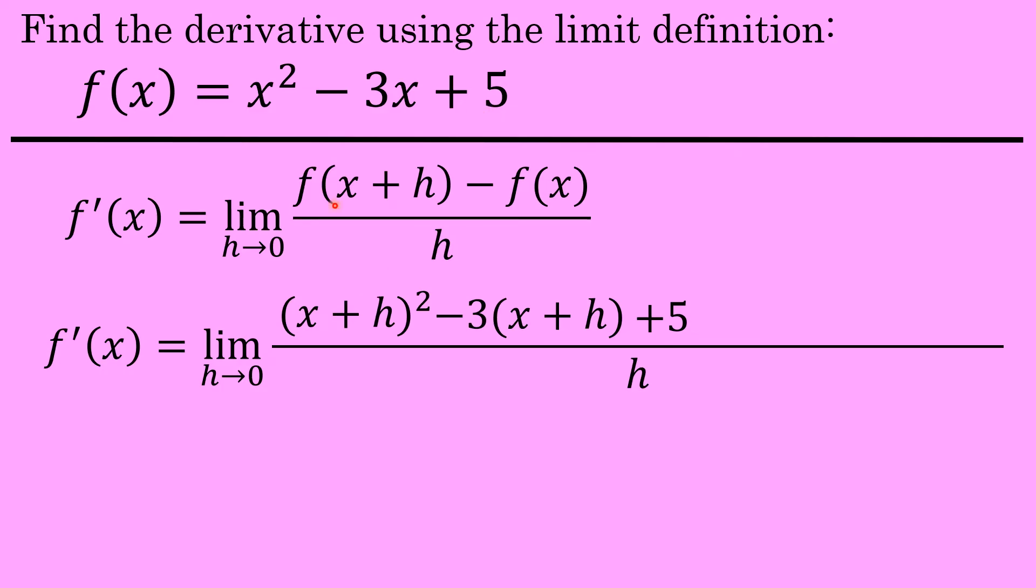Again, all I've done is substituted x plus h for every occurrence of x, or in this case, for the two occurrences of x. Then the limit definition has a minus sign, and after the minus sign comes f of x. So all that I'll do here is include a minus sign, and then copy down x squared minus 3x plus 5 unchanged. I'm going to write it in parentheses, though, because it comes after a minus sign, which will have to be distributed on the next step.